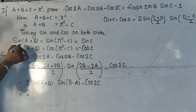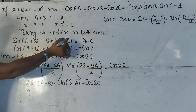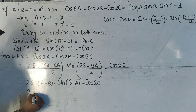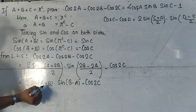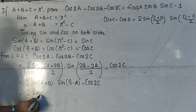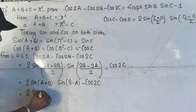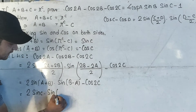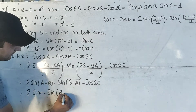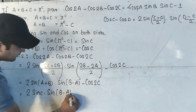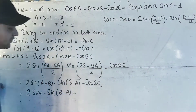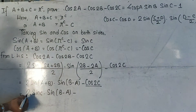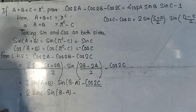Now, 2·sin(a+b) — the value is sinC. So in place of sin(a+b), we will write sinC. Sin(a+b) can be replaced; we will write sinC. Dot sin(b minus a). Now the formula for cos2C should be used in such a way that you can take 2·sinC common.